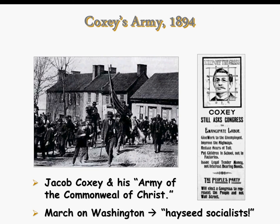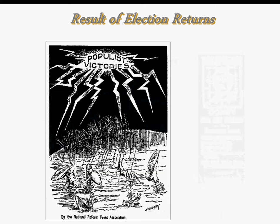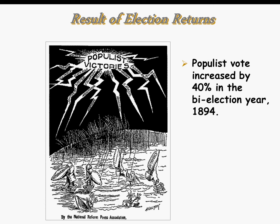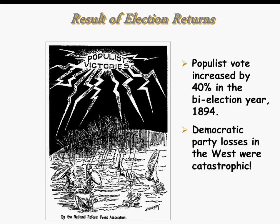Some called Coxey's Army 'hayseed socialists' — people trying to get something from the government. This cartoon shows the election returns, and you can see the Populist victories in Colorado, Dakota, and some other places. Because things were in bad shape, the Populist vote increased by 40% in 1894 because of this downward spiral.